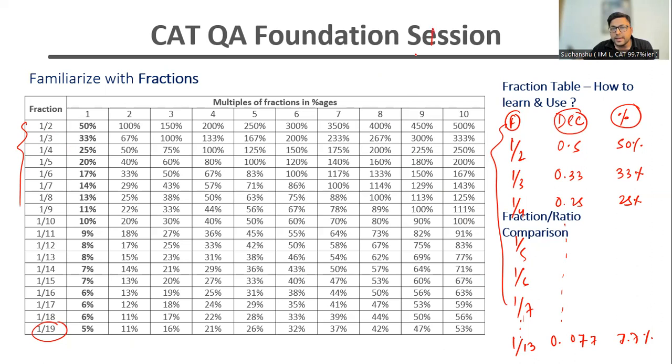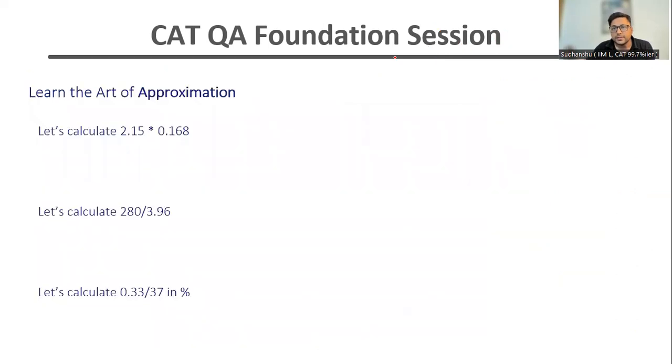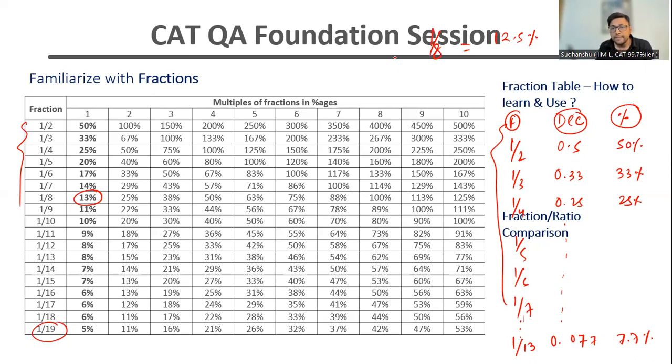Once I know, for example, let's say 1 by 8, which is approximately 12.5 percent, then calculating anything which is associated or related with 1 by 8, for example 3 by 8, will become very easy. Because all I have to do is 3 into 1 by 8 is 12.5, so 3 into 12.5 is 37.5 percent. So I can calculate these fractions very quickly if I remember the fraction table.